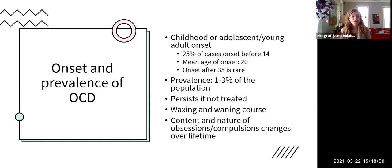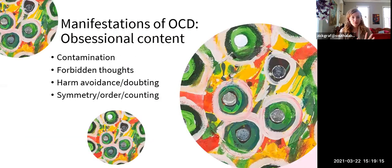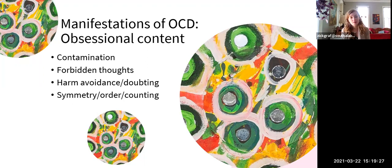This lecture will focus on describing different content and manifestations of OCD. OCD can't be defined by content alone because the content changes over time — OCD tends to grab onto whatever is most important to the person at any given point in their life. The four categories of obsession content we'll cover are: contamination, forbidden thoughts, harm avoidance and doubting, and symmetry, order, and counting.